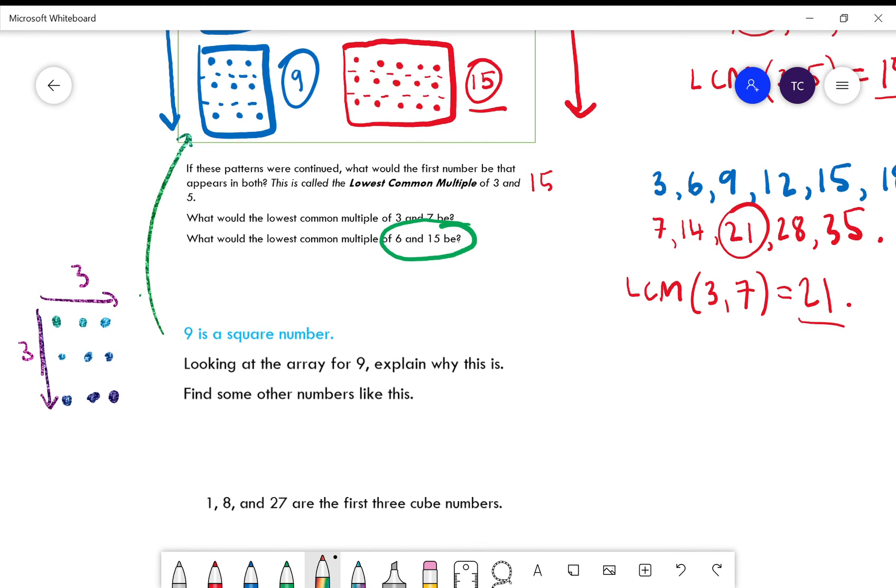So you've got three going along and three down, and that's why it's called a square number, because when you draw the array it looks like a square. Similarly, I've asked you to find some other ones.